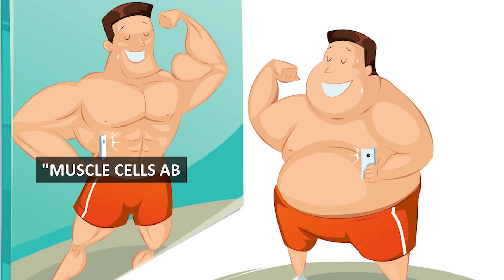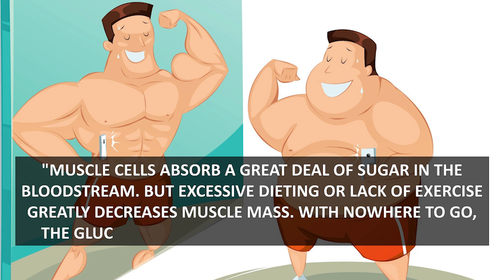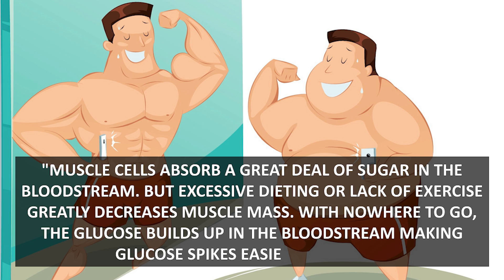They suggest that a major reason for this has to do with their muscle mass. Muscle cells absorb a great deal of sugar in the bloodstream. But excessive dieting or lack of exercise greatly decreases muscle mass. With nowhere to go, the glucose builds up in the bloodstream, making glucose spikes easier to occur. Flabby bodies with little muscle mass are simply not efficient at processing glucose.